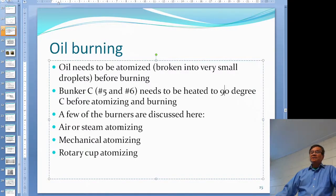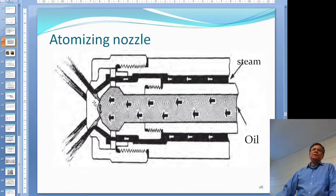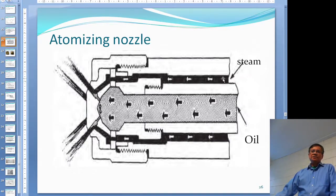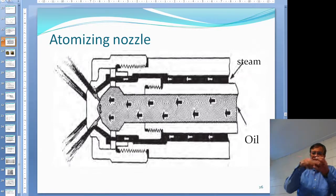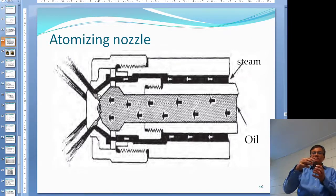For air or steam atomizing, you mix either air or steam with the oil in the center of the gun before it goes out to the furnace. The pressure of the steam or air breaks up the oil into small droplets and sprays it out. Some arrangements have the steam and oil mixture swirl as it exits, which improves mixing and burning efficiency.